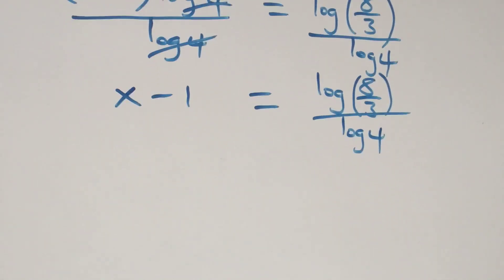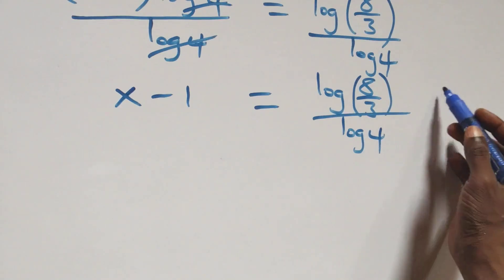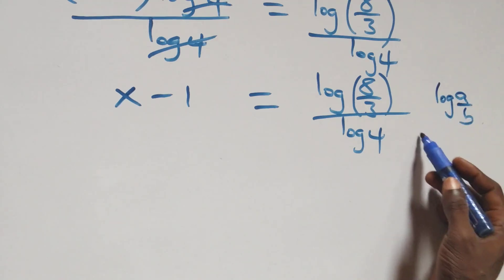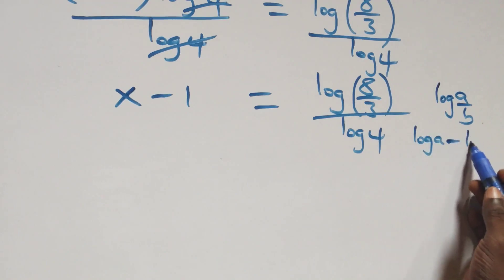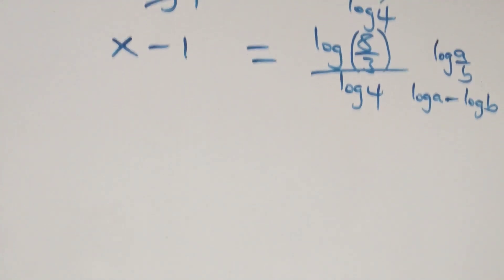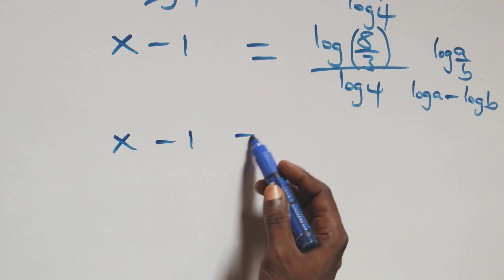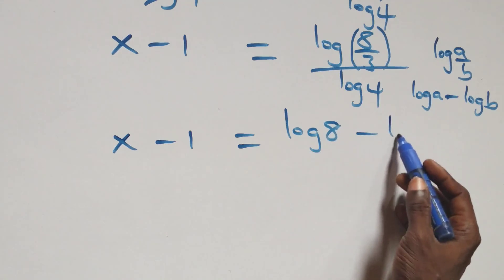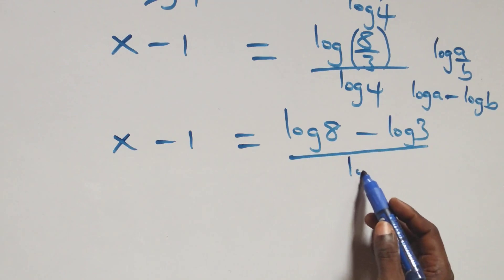We apply the rule log(a/b) equals log a minus log b. So x minus one equals log 8 minus log 3, all over log 4.